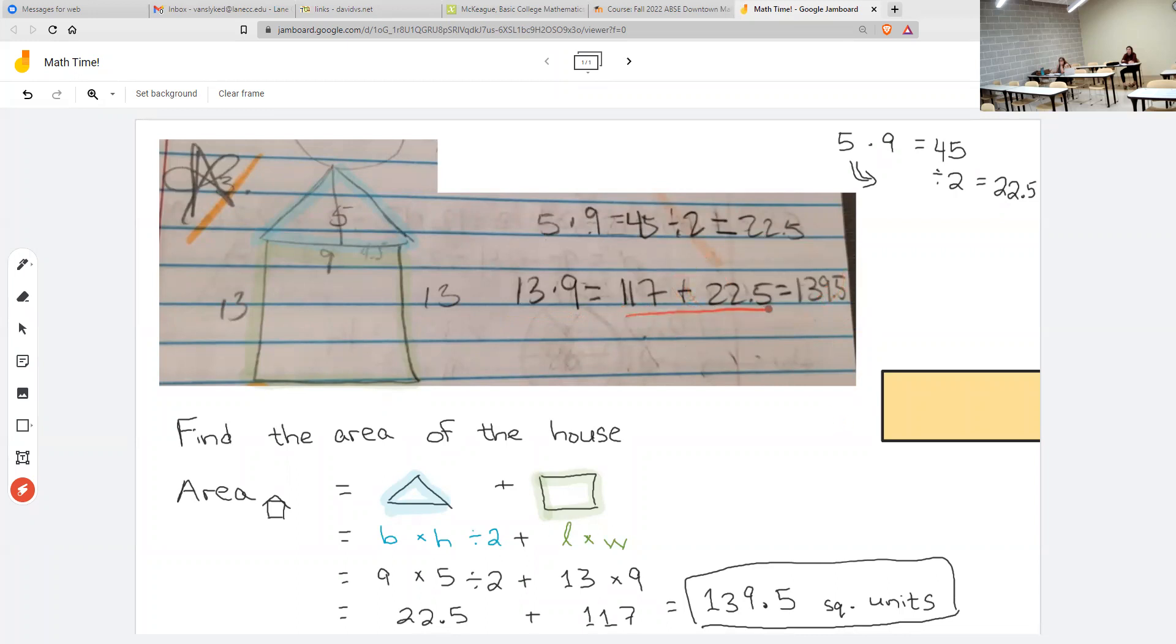Either have 117 plus 22.5, or then add 22.5, or double arrow, or whatever works for you. So equal signs only connect things that are really equal. Otherwise, when you get to algebra, you will have sadness that is avoidable.